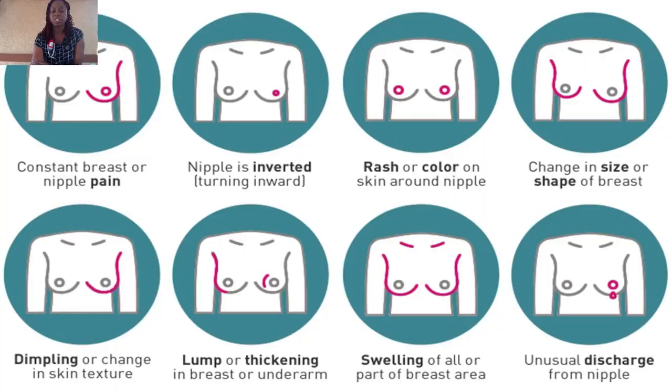Even though these are risk factors for breast cancer, please be aware that more than 60% of breast cancer cases are found in persons with no risk factors. That is why it is important to examine ourselves and know the signs and symptoms of breast cancer. These include constant pain in the breast, changes in the nipples such as inverted nipples, a rash or discoloration over the skin of the breast, any change in the size, shape, or contour of the breast, a lump, swelling, or any thickening in the breasts, and a discharge from the nipple. Those are signs that we need to get help from a doctor.